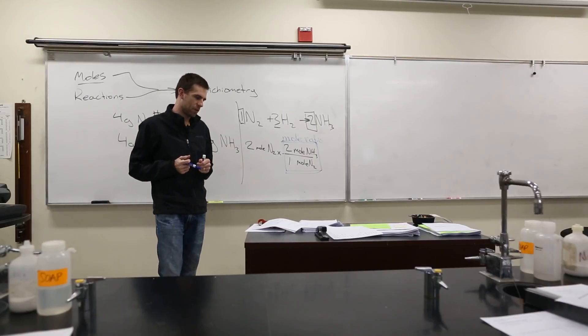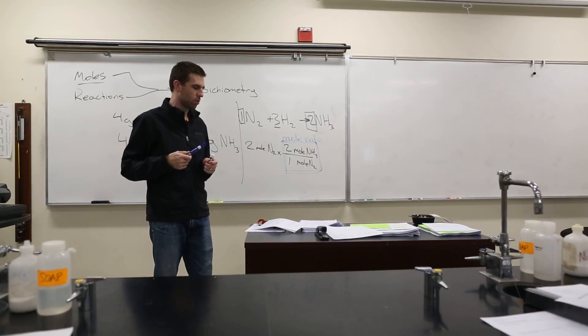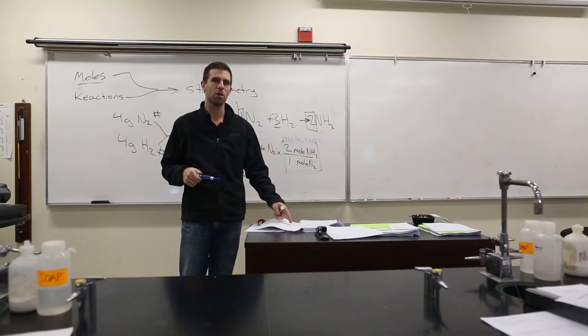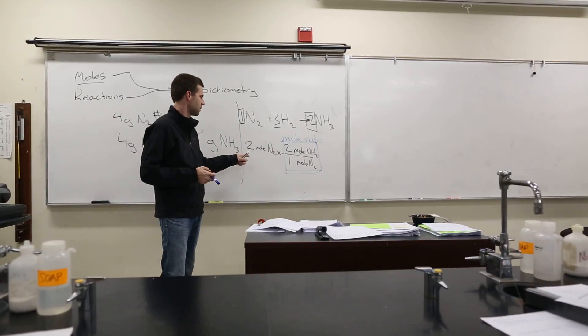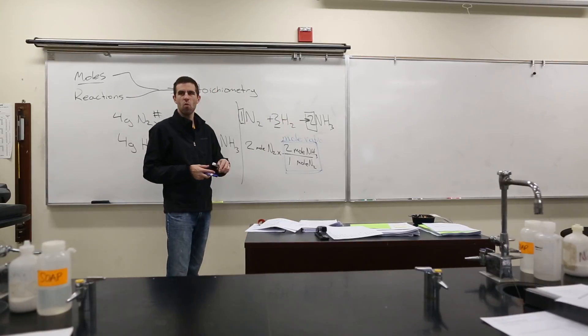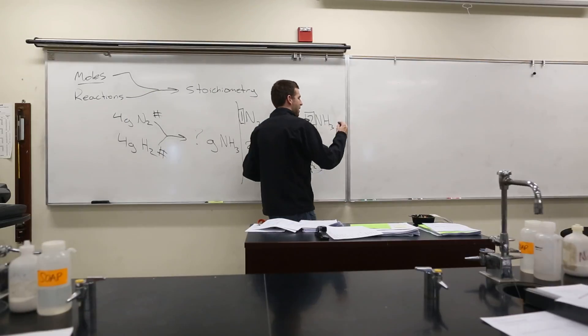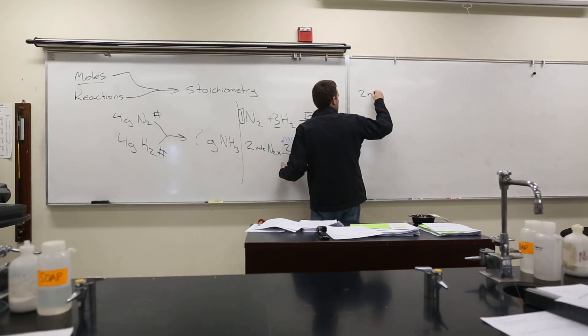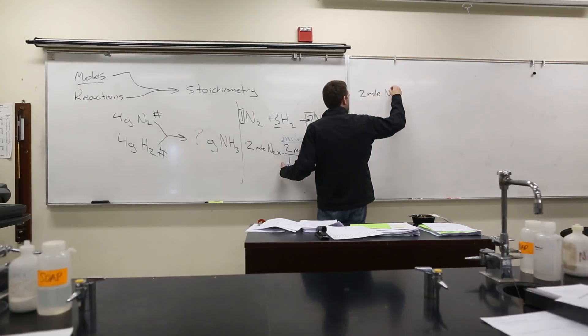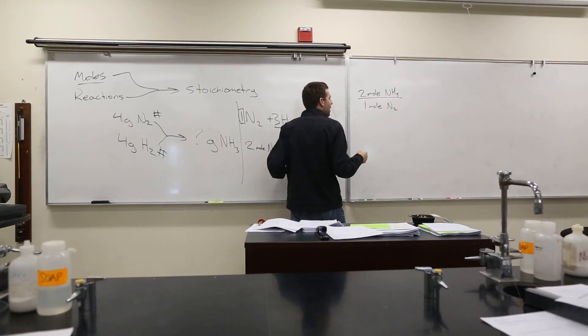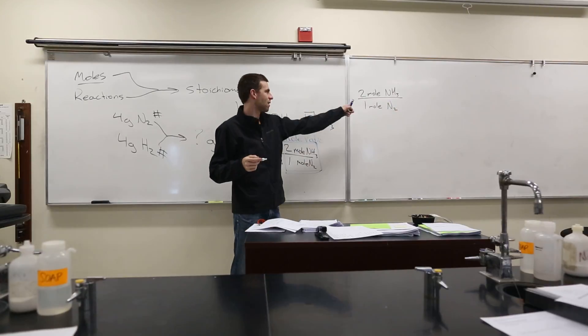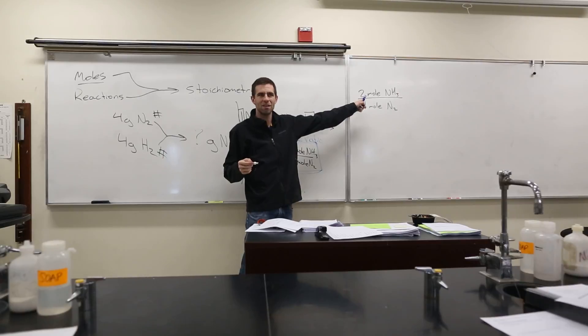So the first question in front of you says, write all possible mole ratios for the following chemical equation. So for this chemical equation, what mole ratios can we write? Well I wrote one, right? Two moles of NH3 to one mole of N2. What else can I do? The easiest thing. I have to just take this and do what to it? Flip it over.